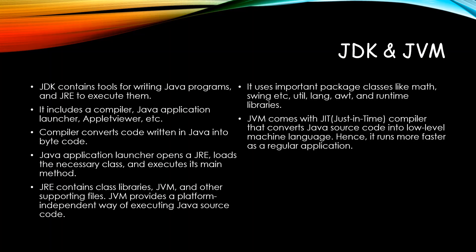JVM provides a platform-independent way of executing Java source code. It generally contains important packages which include classes related to math, swing, languages, etc. — we come to know about all of them when you start working thoroughly on Java programming. JVM comes with a just-in-time compiler that converts the source code into low-level machine language which runs on the platform, so ultimately your Java code gets converted into machine-level code.